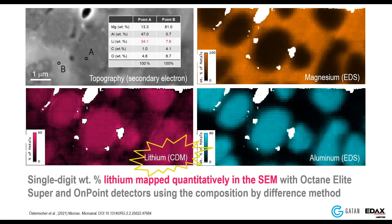In late 2021, together with the Austrian Institute of Technology, we published the first quantitative map of lithium in the SEM — this time from a magnesium-lithium-aluminum alloy. In that publication we demonstrated that we're able to map single-digit weight percentages of lithium quantitatively in the SEM. This was a real first. Subsequently we've been working together with the Austrian Institute of Technology to extend the technique to other materials such as metal oxides used in the construction of lithium-ion batteries.